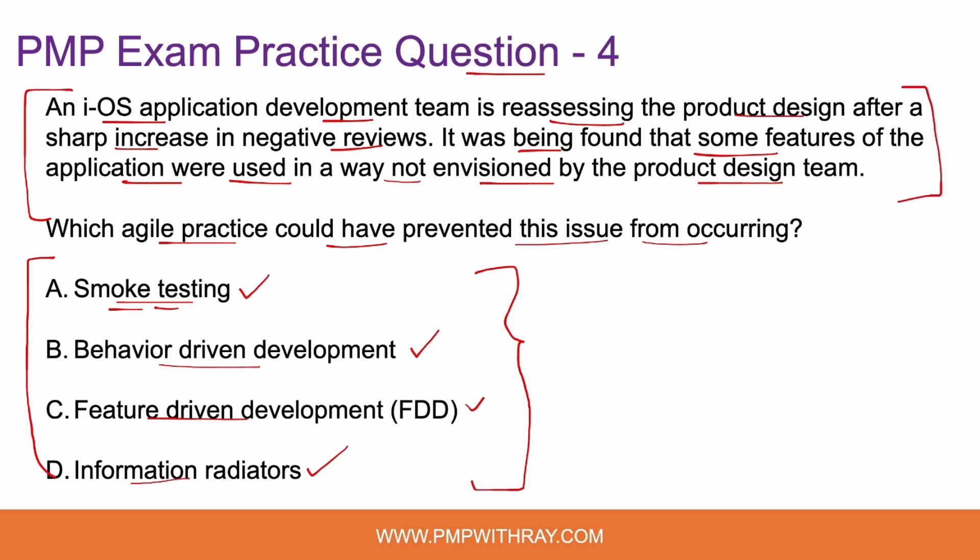The four options are smoke testing, behavior driven development, feature driven development, and information radiators. To answer this correctly, you need to understand each term in the context of agile project management — if you know them, you can answer in under 30 seconds. Option A: smoke testing. In agile, smoke testing is a type of preliminary testing conducted to quickly evaluate whether the most critical functionalities of a software application are working as expected. Its primary purpose is to determine if the build is stable enough for more in-depth testing. We are not talking about that here — the gap happened at the design and development stage, not the testing phase. So smoke testing is an incorrect answer choice.